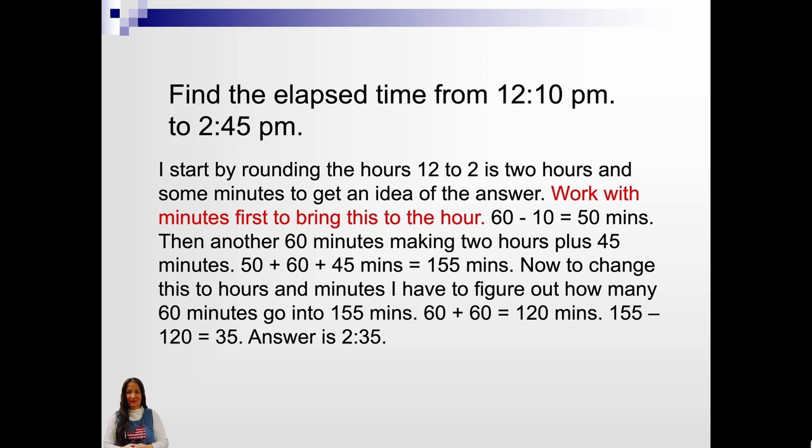Find the elapsed time from 12:10 p.m. to 2:45 p.m. I start by rounding the hours. 12 to 2 is 2 hours and some minutes to get an idea of the answer. Work with the minutes first to bring this to the hour. 60 minus 10 equals 50 minutes. Then another 60 minutes making 2 hours plus 45 minutes. 50 plus 60 plus 45 equals 155 minutes. Now, to change this to hours and minutes, I have to figure out how many 60 minutes go into 155 minutes. 60 plus 60 equals 120. 155 minus 120 equals 35. The answer is 2:35. 2 hours and 35 minutes.